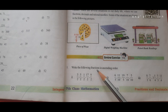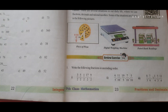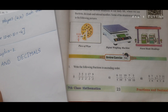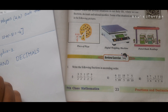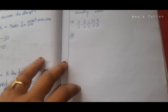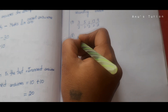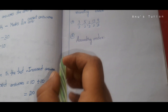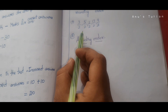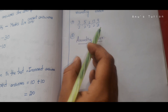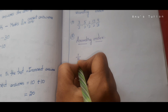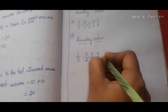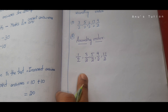Next we will start the review exercise. The first section: write the following fractions in ascending order. Ascending order means writing fractions from small to big. Here, first of all, you have to see that all denominators are equal. Here numerators are different. So the ascending order is: 1 by 2, next 3 by 2, next 5 by 2, next 9 by 2, next 17 by 2. This is the answer for the first one.